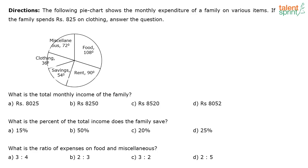What is the total monthly income of the family? So what is the answer for the first question? 8250. Very easy question, right? What is the total monthly income of the family? The family spends 825 rupees on clothing, so clothing accounts to 36 degrees.